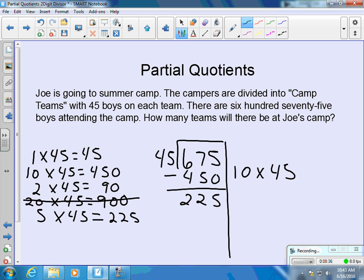If we look at our cluster problems, and there we see 225 in our list. When we use 5 groups of 45, there are 225 boys used. So now we're down to 0 boys. So now we look to see how many groups of 45 we were able to make, and we see it's 15.